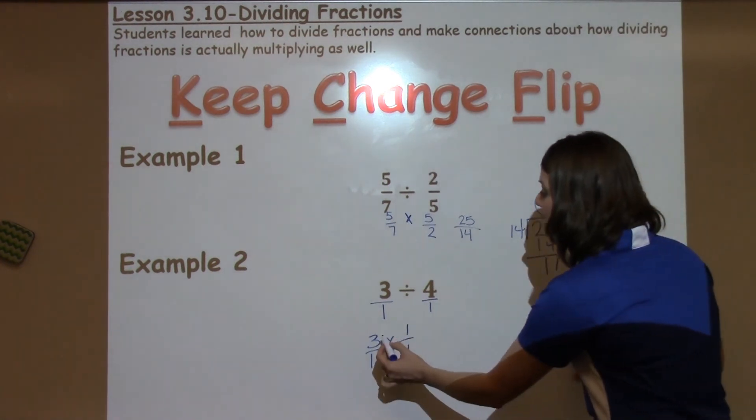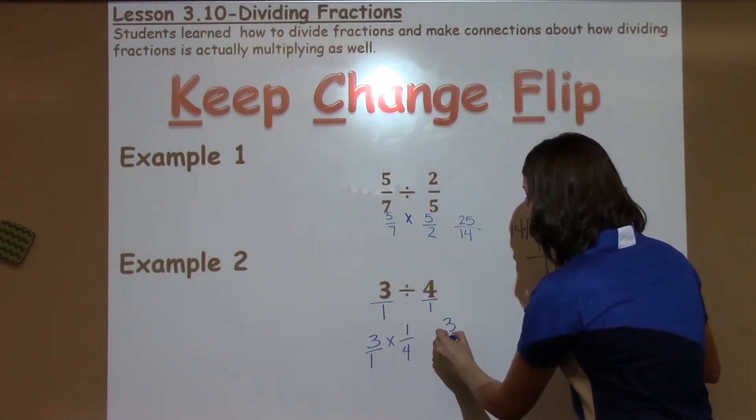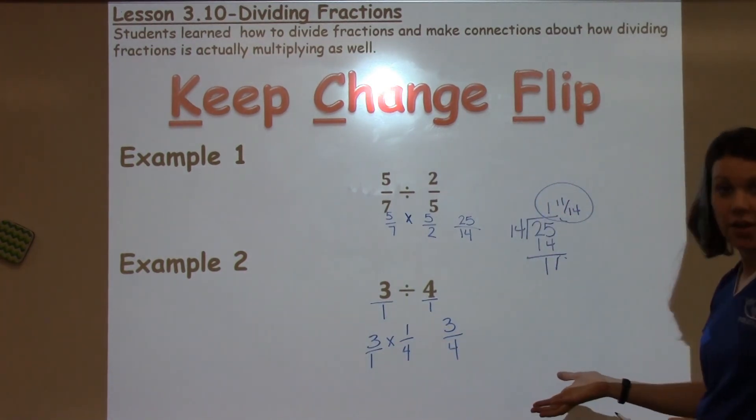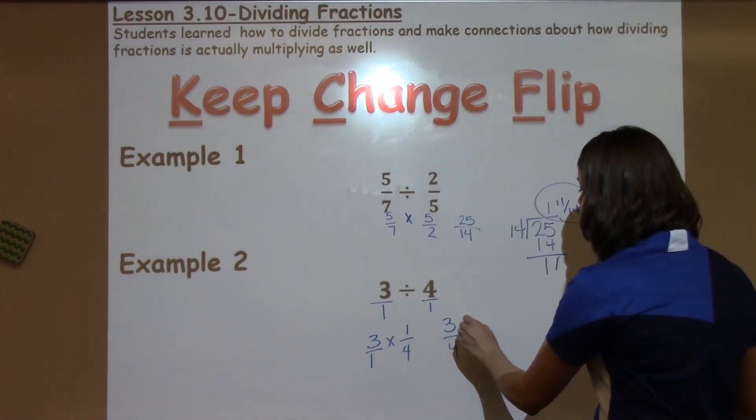When I multiply this across, I have 3 times 1 is 3, and 4 times 1 is 4. This is as simple as it can go, so that is the finish of the problem.